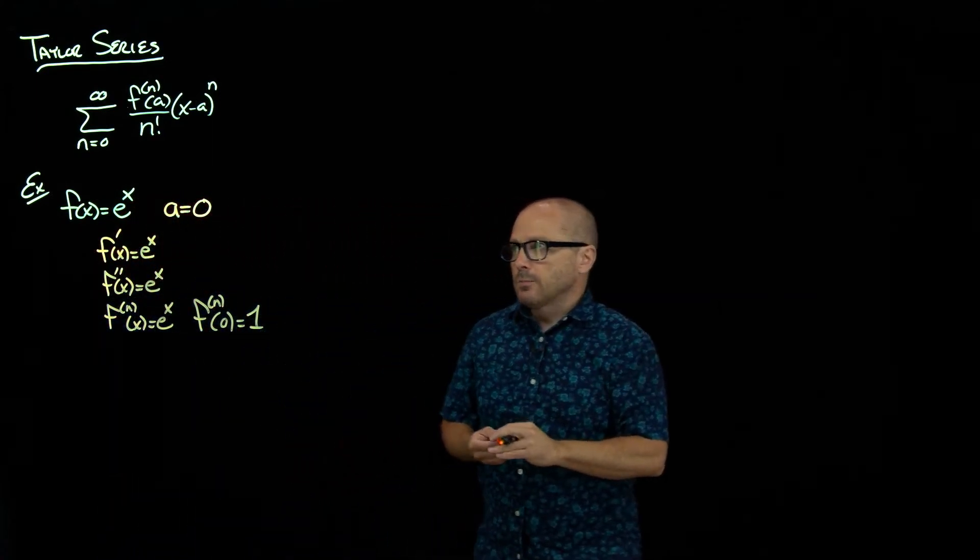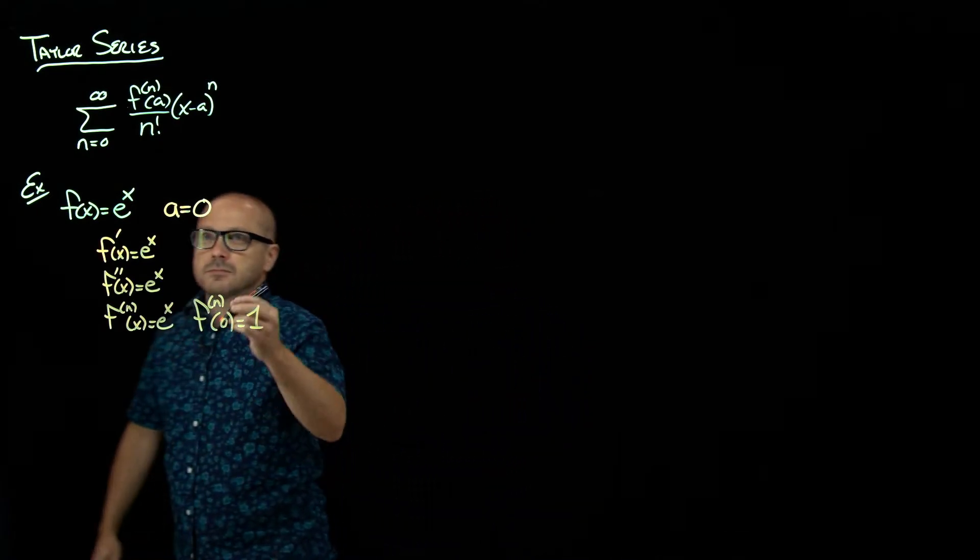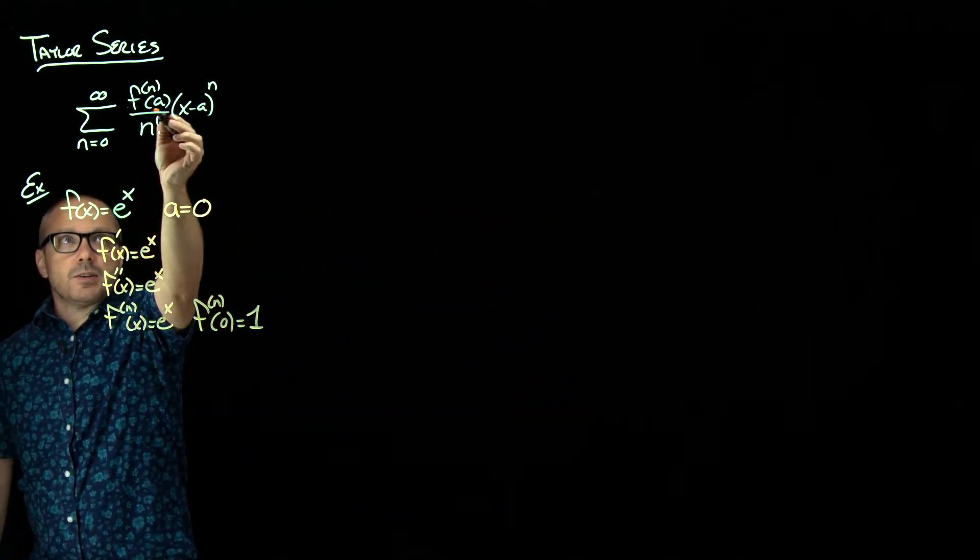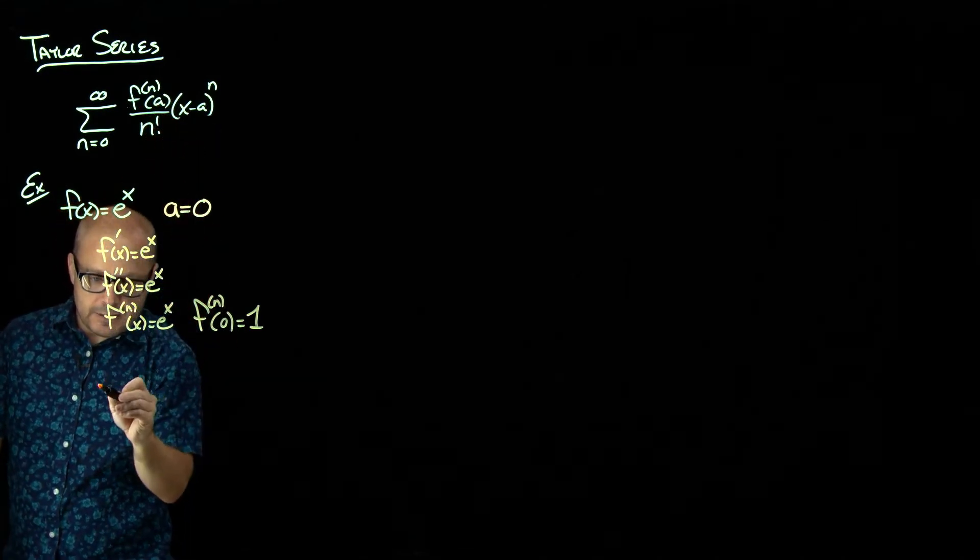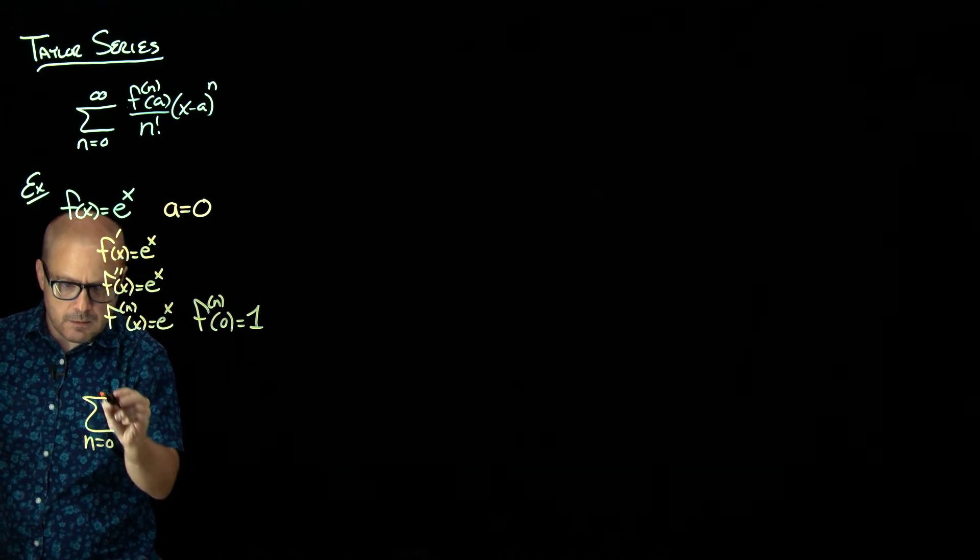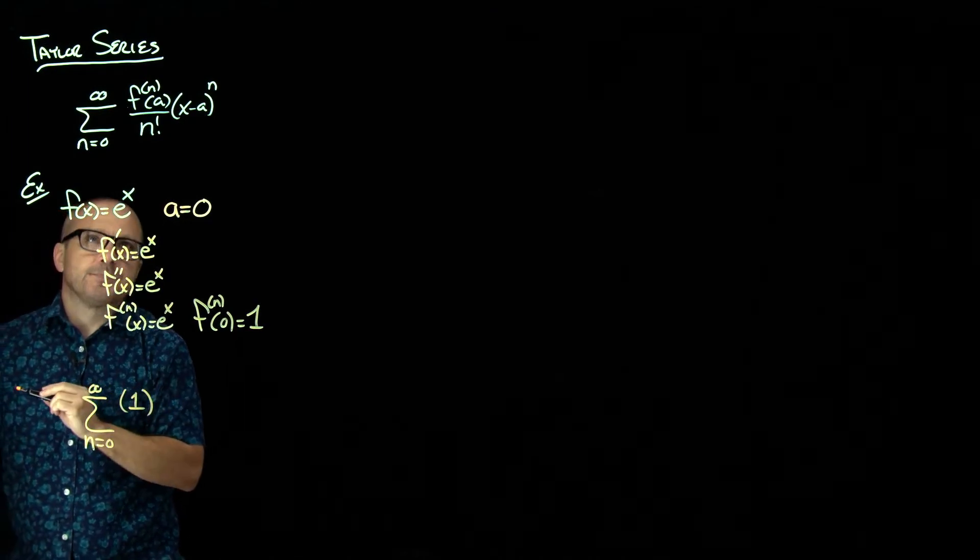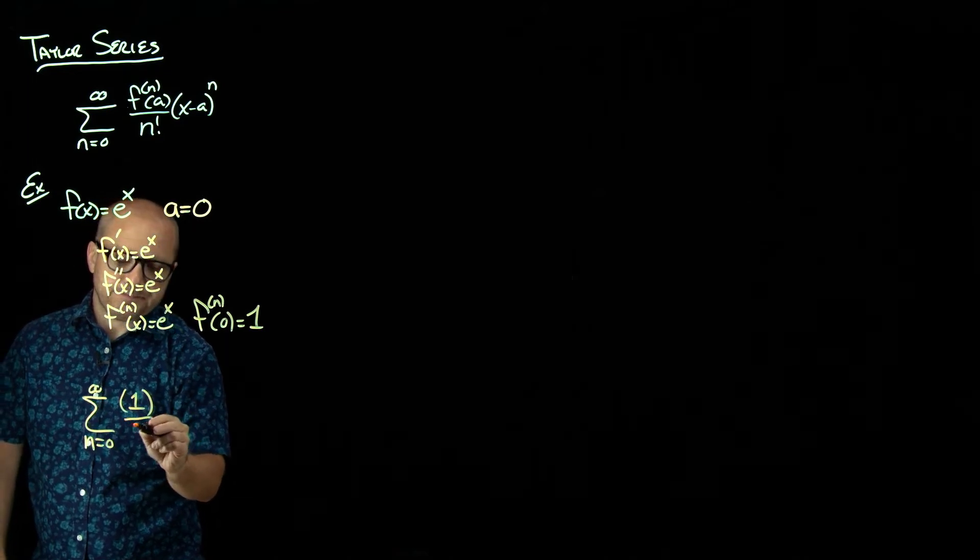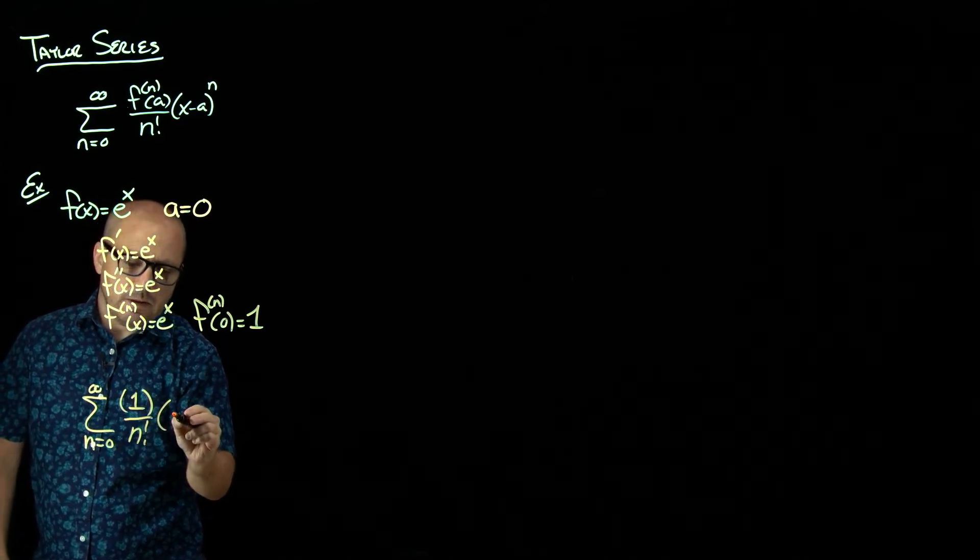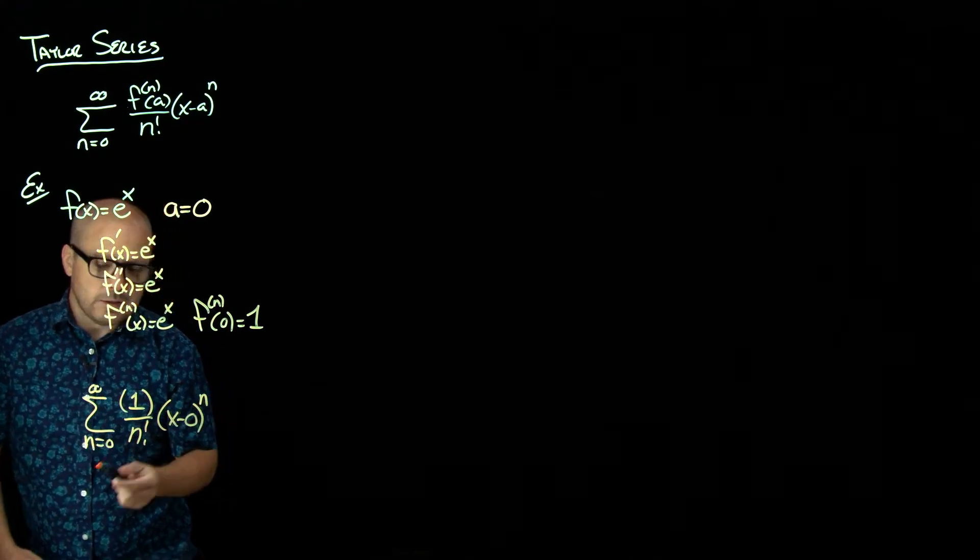So all derivatives at 0 are just e to the 0 or 1. So our series, this term is always just 1, which makes this nice. So our derivatives at A are 1, n factorial,